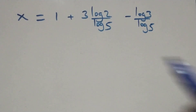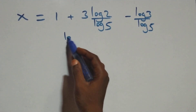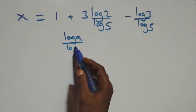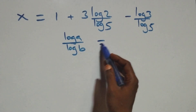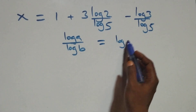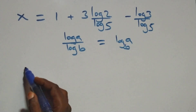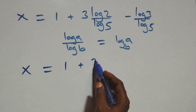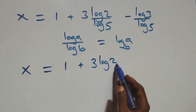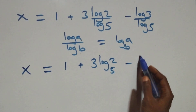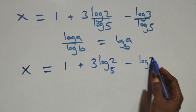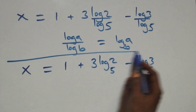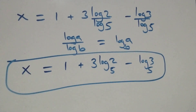Applying the change of base rule — log a over log b is the same as log base b of a — we get x equals 1 plus 3 log base 5 of 2 minus log base 5 of 3. That is the value of x.